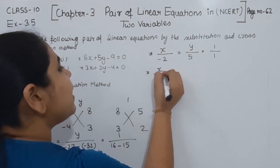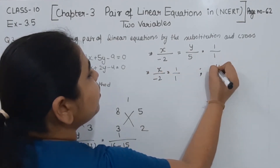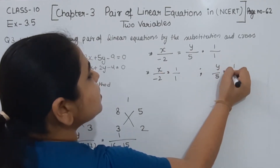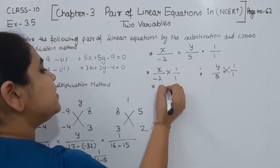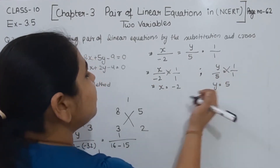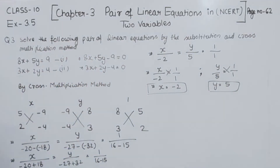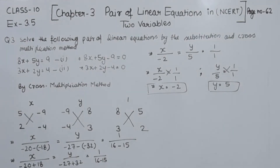Setting x divided by minus 2 equal to 1, we get x equals minus 2. Setting y divided by 5 equal to 1, we get y equals 5. So the value of x is minus 2 and y is 5, confirmed by both the substitution method and the cross multiplication method. Question number 3 is complete; in the next video we will start question number 4.